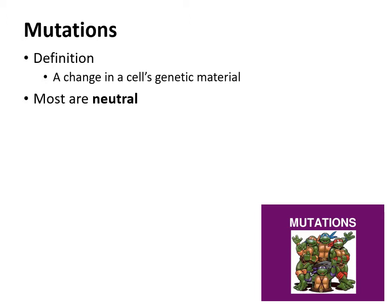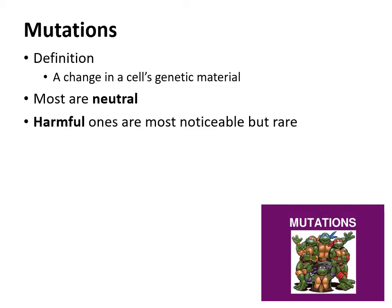Most mutations are neutral and you never even notice they occur. There are harmful ones, but even though they're rare, they're more noticeable because they're so detrimental. They are rare because they tend not to carry on — if a mutation is really bad and kills an organism early, sometimes before it's even born, that organism doesn't get a chance to reproduce, so that mutation doesn't get passed on.